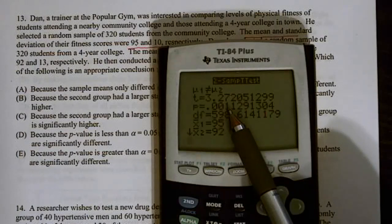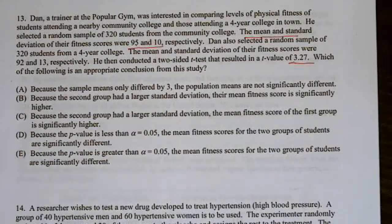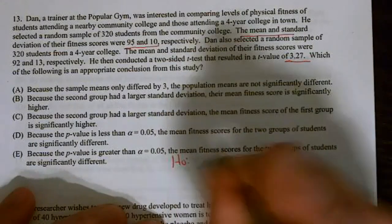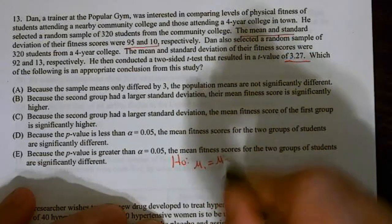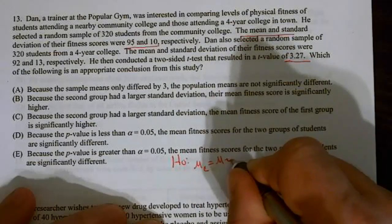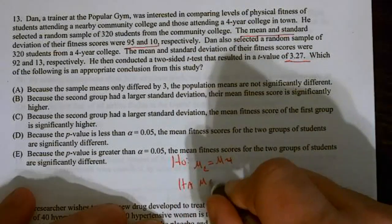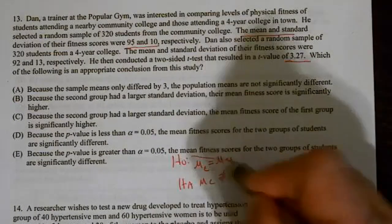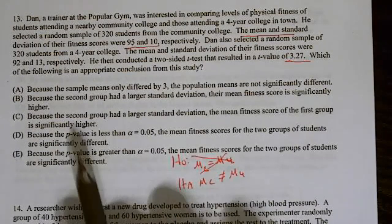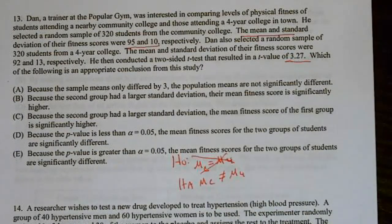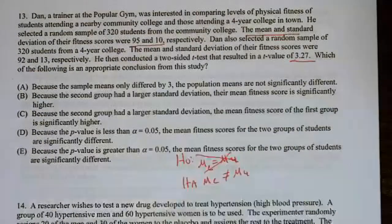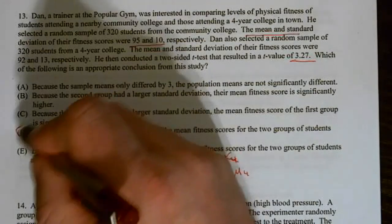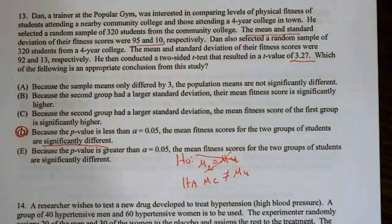So in this particular case, we know with that p-value, that is a very small p-value. The p-value is less than alpha. So because it's less than alpha, we're going to reject. So what would have been our null hypothesis? Mu 1 equals mu 2. Mu of the community college equals mu of the four-year college. Or alternative, mu of the community college does not equal mu of the four-year college. So in this case, we're going to reject this and believe that there is a difference. Because the p-value is less than 0.05, we're going to reject the null and we're going to believe that they are significantly different.